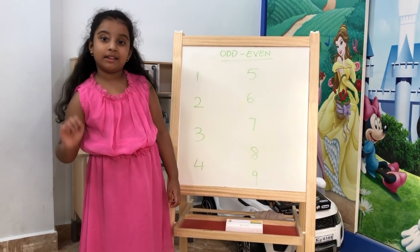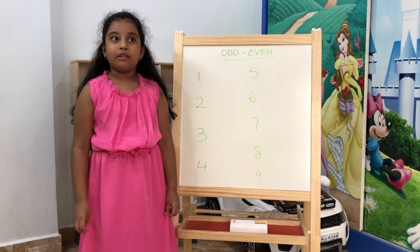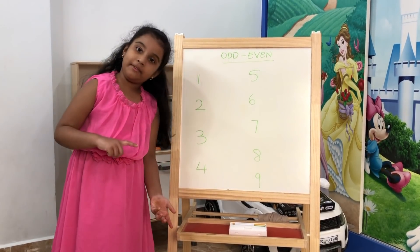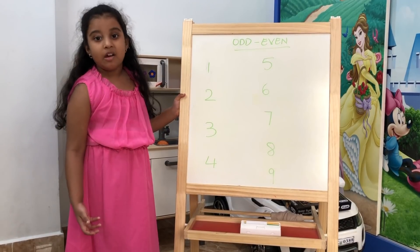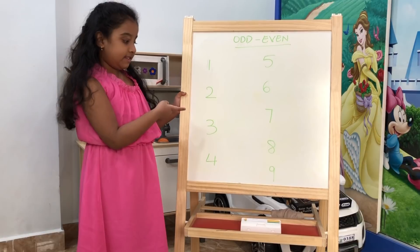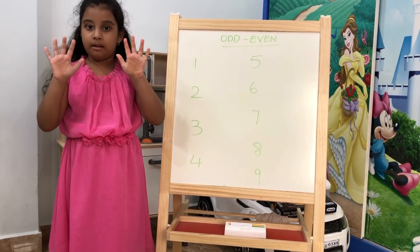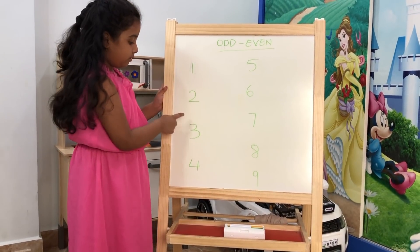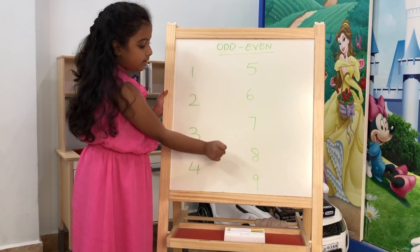Hello guys, welcome to Funopia! Today we will learn about odd and even. We have a combination of odd and even. There are nine numbers: one, two, three, four, five, six, seven, eight, nine.